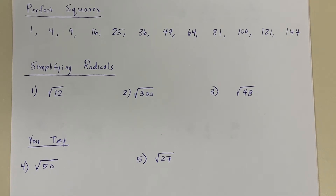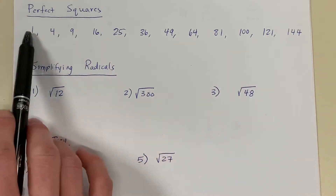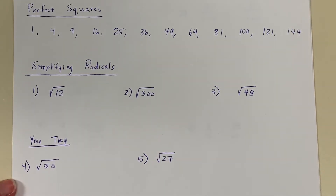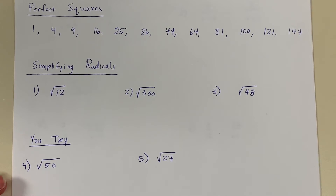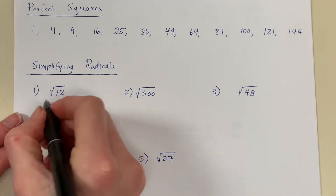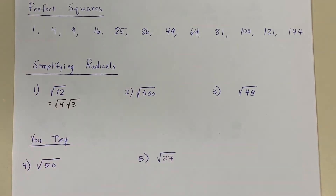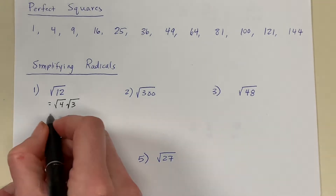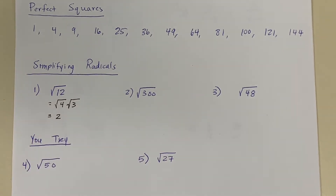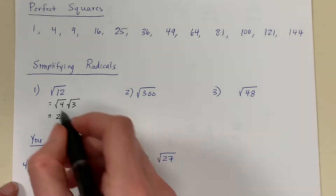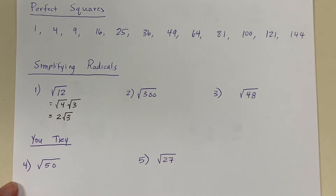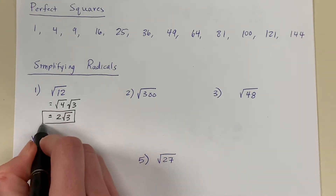In problem number 1, we have the square root of 12. To simplify the radical, I want to find the largest perfect square that divides into 12. I'm looking at my perfect squares and deciding what's the largest number that actually divides into 12, and the answer is 4. So I'm going to rewrite the square root of 12 as the product of two radicals: the square root of 4 times the square root of 3. Now, 4 times 3 is 12, and radical 4 times radical 3 is radical 12. I can take the square root of 4 — it is 2. But I cannot take the square root of 3, and there's not a perfect square that divides into 3. So I'm going to keep the radical 3, and I have 2 radical 3. This is simplest radical form for the square root of 12.